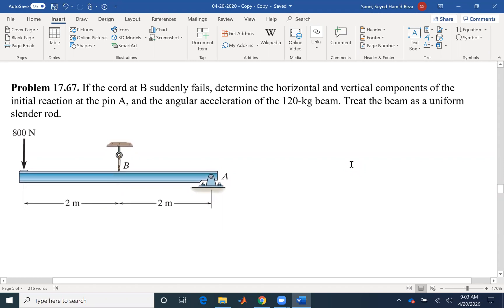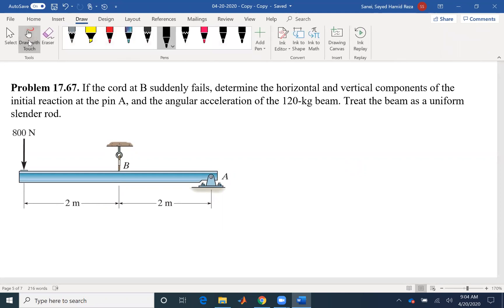We are interested in finding the initial reactions because after you have acceleration, the reactions would change. And the angular acceleration of the 120 kilogram beam, we have the mass and we have the length, which is 4. If we have the mass and length, that means we have the moment of inertia, which is one-third M L squared.